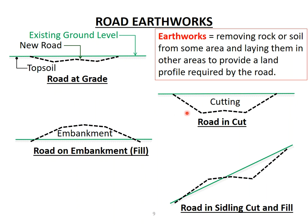Sometimes a section of road is below the existing ground level, in which case a cutting is required — soil is removed into a fill area or taken away for disposal. That is called a road in cut. Sometimes the road surface is above the existing ground level, requiring the surface to be built up — that structure is called an embankment, so it's called road on an embankment or road in fill.